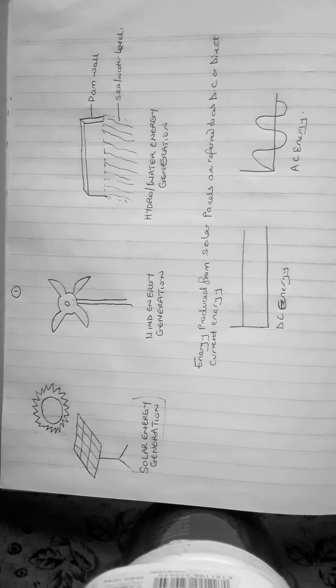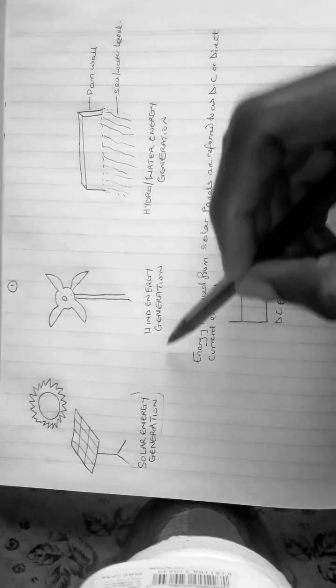The hydro or water energy generation, of course we know it. An example of this is Kainji Dam in Nigeria. Now these are different types of energy generation. We also have gas turbines.